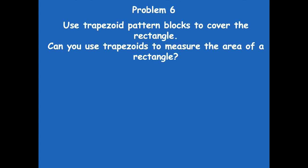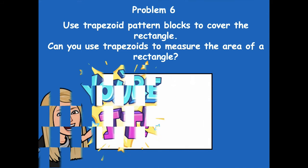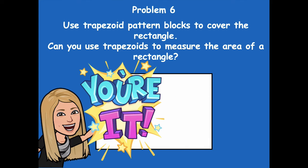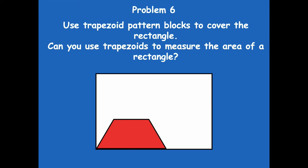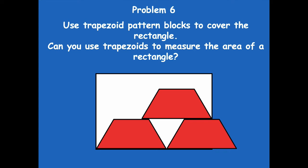Problem six: use trapezoid pattern blocks to cover the rectangle — can you measure the area with trapezoids? Try it, then click play. When I tried, I got my trapezoid in there, but then I can't place the next one without a gap or having it hang over. That tells me I can't use a trapezoid to measure the area of this rectangle — there are too many spaces that won't fit a trapezoid. A trapezoid is not a good pattern block to use here.